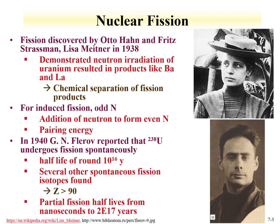So odd-N isotopes, heavy odd-N isotopes, can undergo fission. In 1940, Georgi Flerov, a Soviet scientist, reported that uranium-238 underwent spontaneous fission — it fissioned on its own as another route of decay. Uranium-238's spontaneous fission half-life is around 10^16 years, while the alpha decay half-life is 4.5×10^9 years, so the spontaneous fission half-life is much longer. Several other spontaneous fission isotopes were found, with partial fission half-lives ranging from nanoseconds to 2×10^17 years.